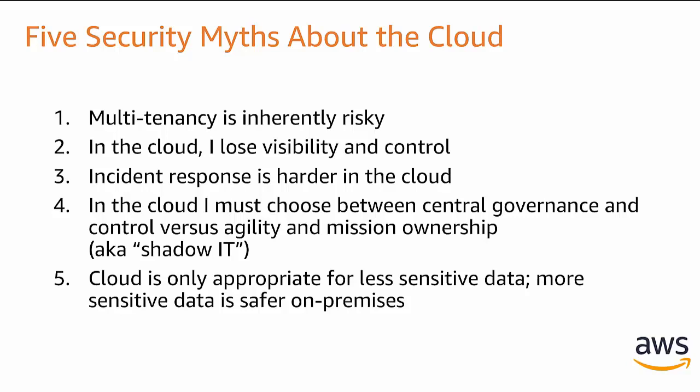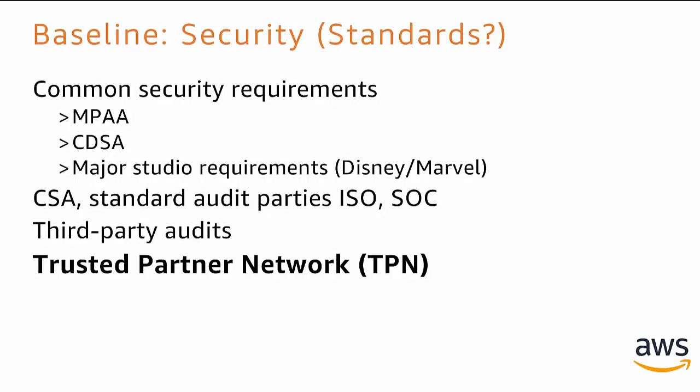Again, it goes back to the visibility issue — how do I get incident response? In the cloud, some feel you must choose between central governance and control versus agility and mission ownership, also known as shadow IT. Cloud also gives you a lot of freedom for developers, but at the same time it provides a lot of tooling for governance. Another myth is that cloud is only appropriate for less sensitive data and that more sensitive data is safer on premises. But I can relate to many examples of customers running highly sensitive and mission-critical workloads, including federal government, all on the AWS platform.